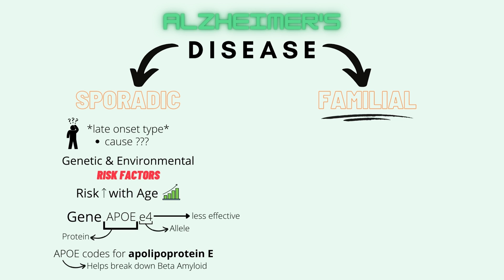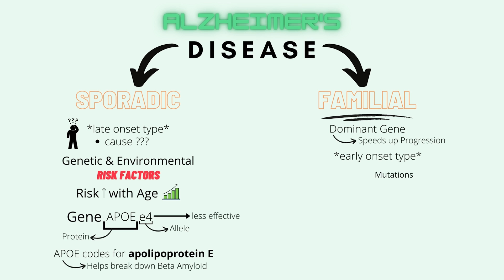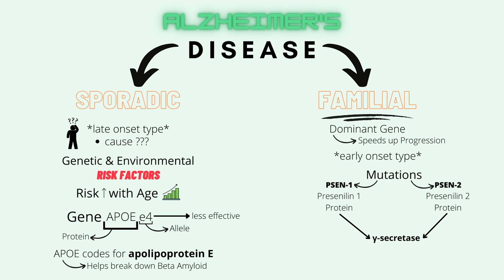Familial Alzheimer's disease describes cases where a dormant inherited gene speeds up the progression of the disease. As a result, familial Alzheimer's is referred to as early-onset Alzheimer's disease. Mutations in the PSEN1 or PSEN2 genes are linked to early-onset Alzheimer's disease. These genes encode for the presenilin 1 and presenilin 2 protein subunits, which make up the gamma secretase protein. Mutations in these subunits can change the location where gamma secretase breaks the amyloid precursor protein, producing different lengths of beta amyloid molecules that are better at clumping and forming plaques.